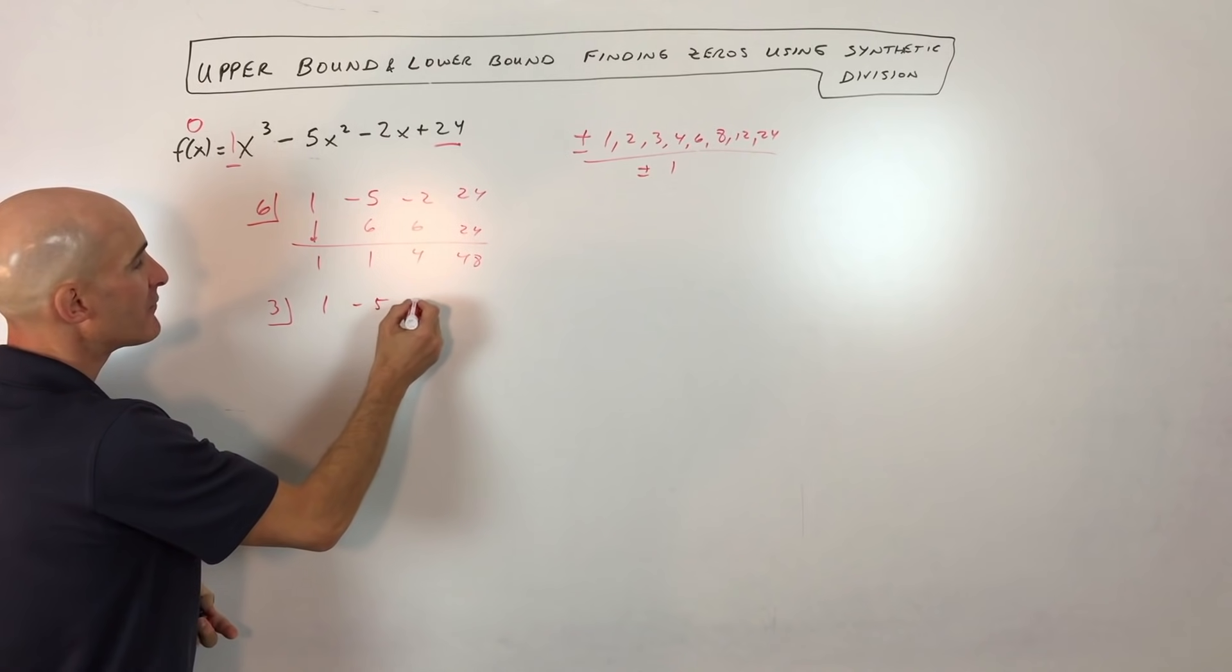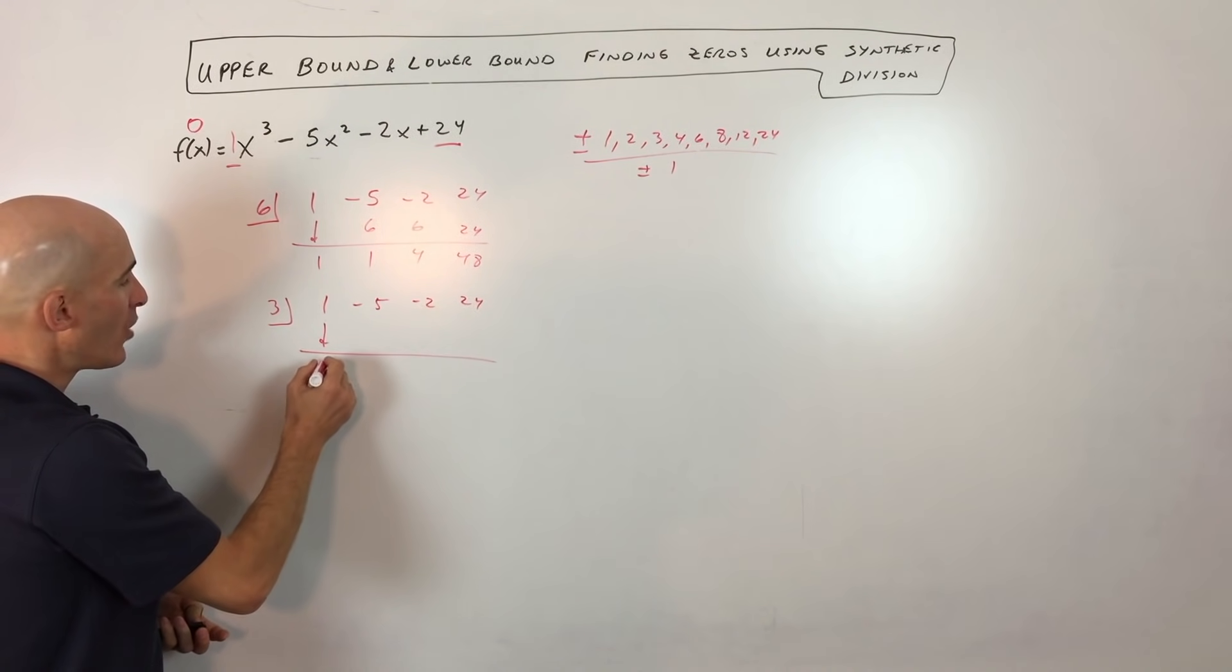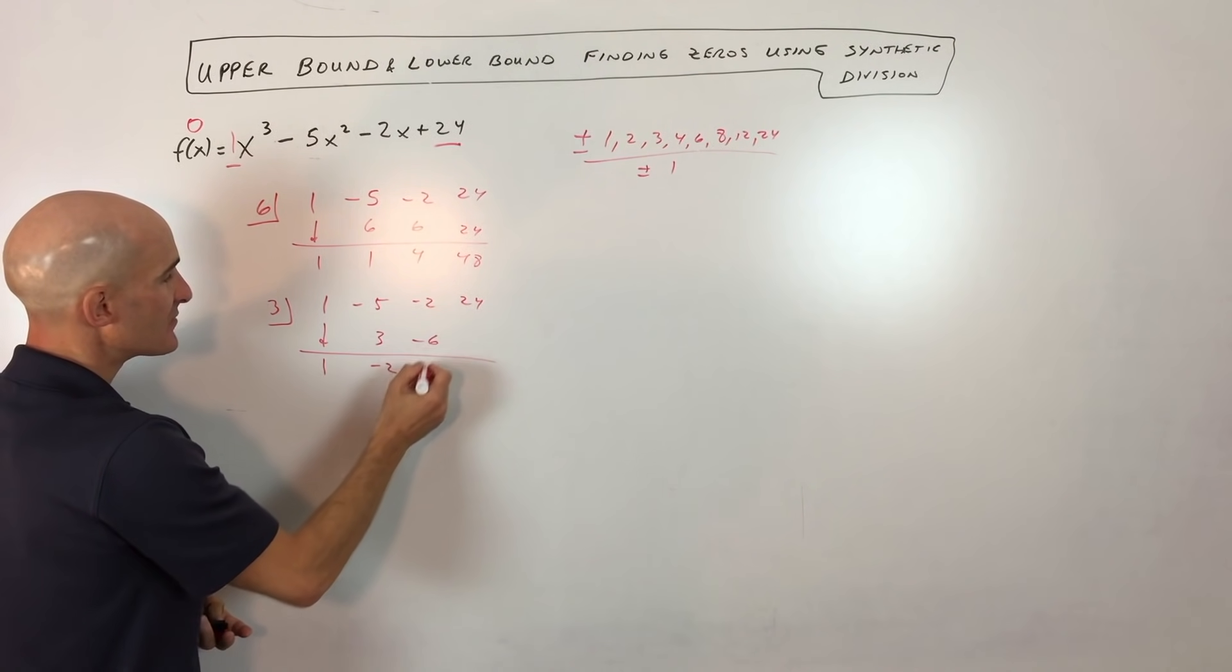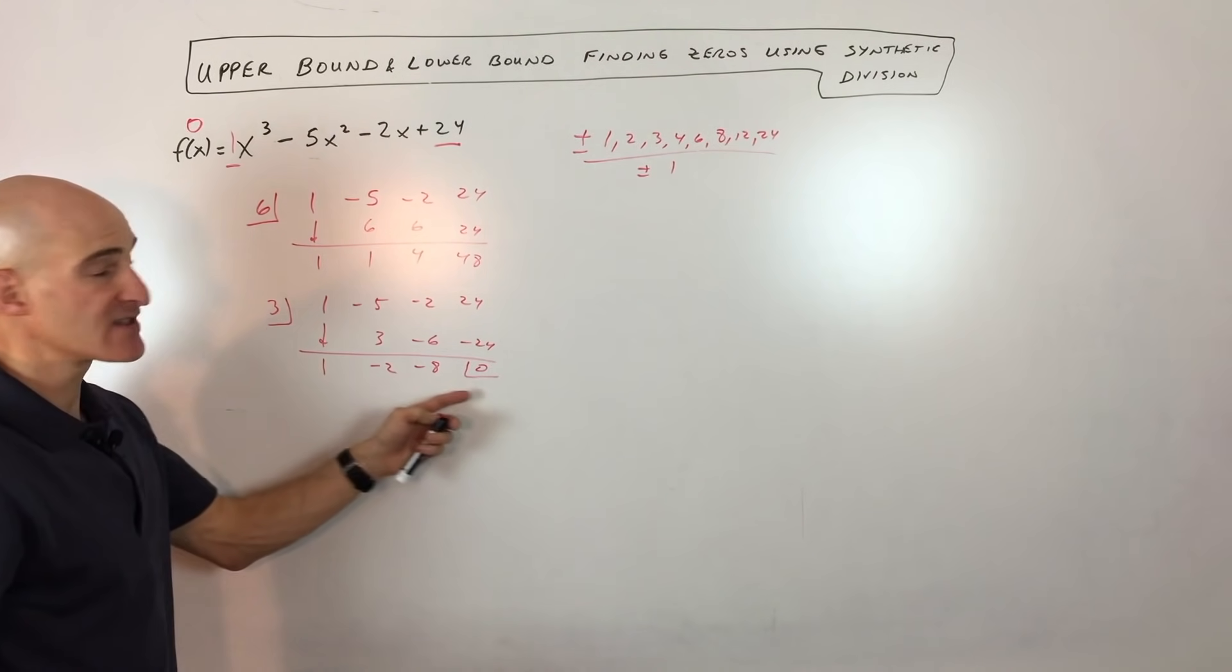So this is, again, one negative five, negative two, 24. And let's see, we're going to bring down the one here. That's three. That's negative two. That's negative six, negative eight. Ah, there we go, negative 24. So that is three is a zero.